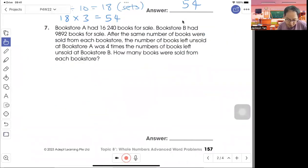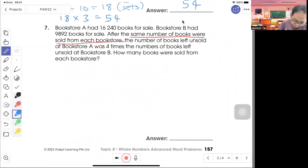Question 7. Bookstore A had 16,240 books. Bookstore B had 9,892 books. After the same number of books was sold from each bookstore. So here's the keyword, same number of books was sold from each bookstore. The number of books left unsold at bookstore A was 4 times the number of books left unsold. How many books was sold from each bookstore.